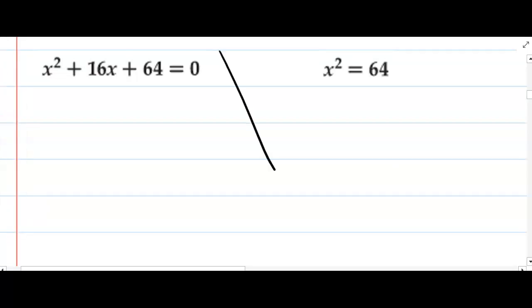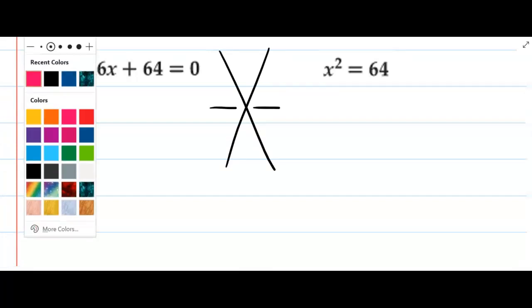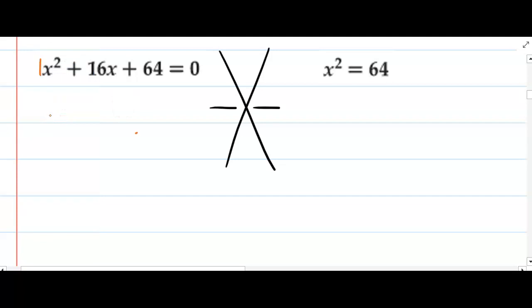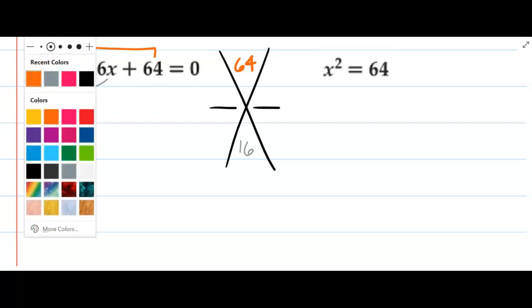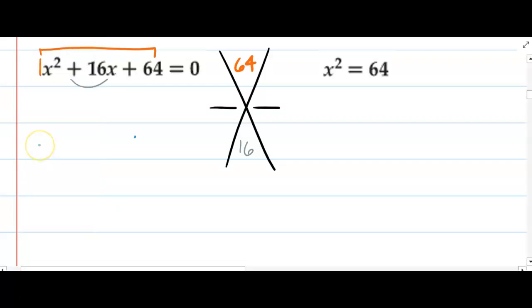We first ask ourselves what is 1 times 64, and the answer is 64. Then we put this middle number in the middle on the bottom, and then finally we put this leading coefficient right here.